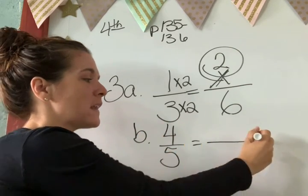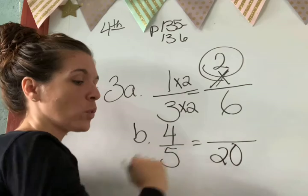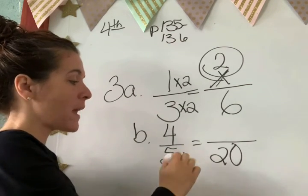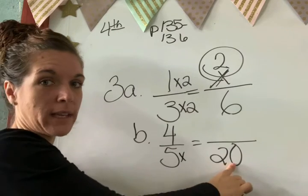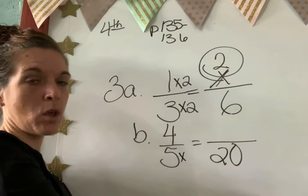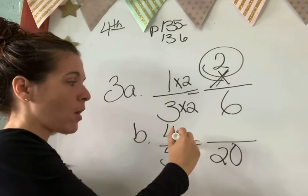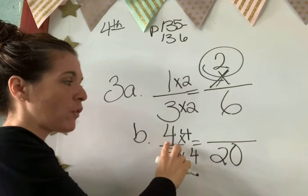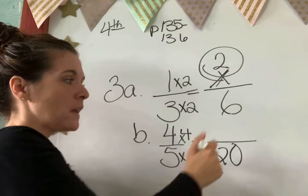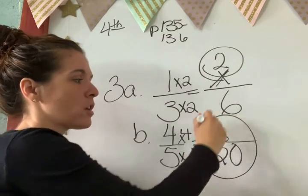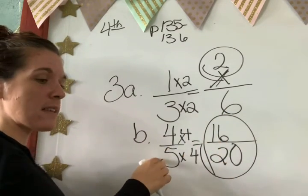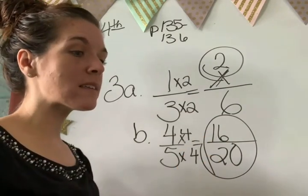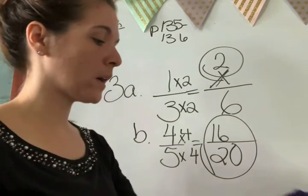Okay. Let's try letter B. Now they want 4 fifths to have a denominator of 20. What do I have to multiply this number by, Scarlett, to get 20? 4. So what do I multiply up here? 4. Good. So 4 times 4 is what, Scarlett? 16. So there's your equivalent fraction. 4 fifths equals 16 over 20. Go ahead and try letter C by yourself.